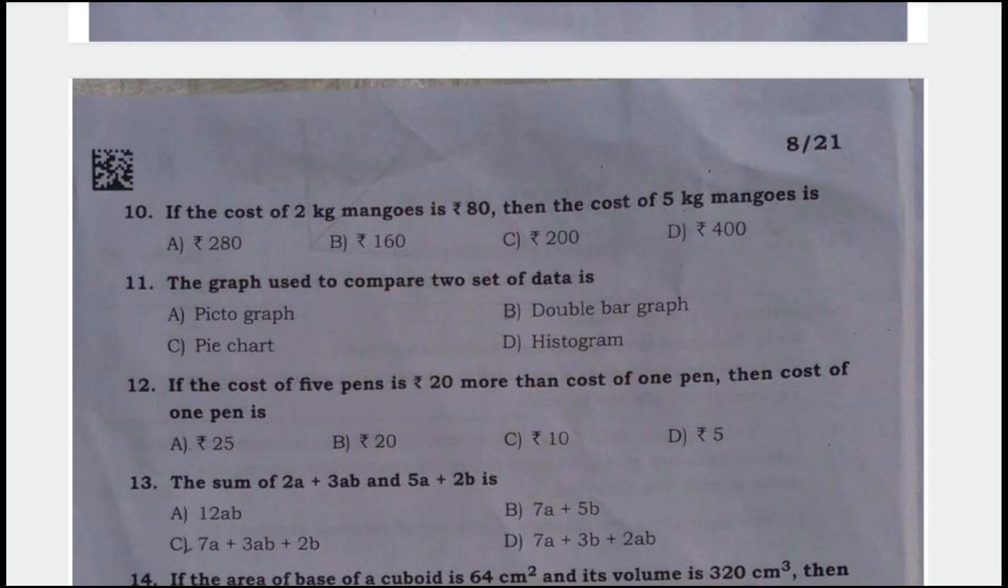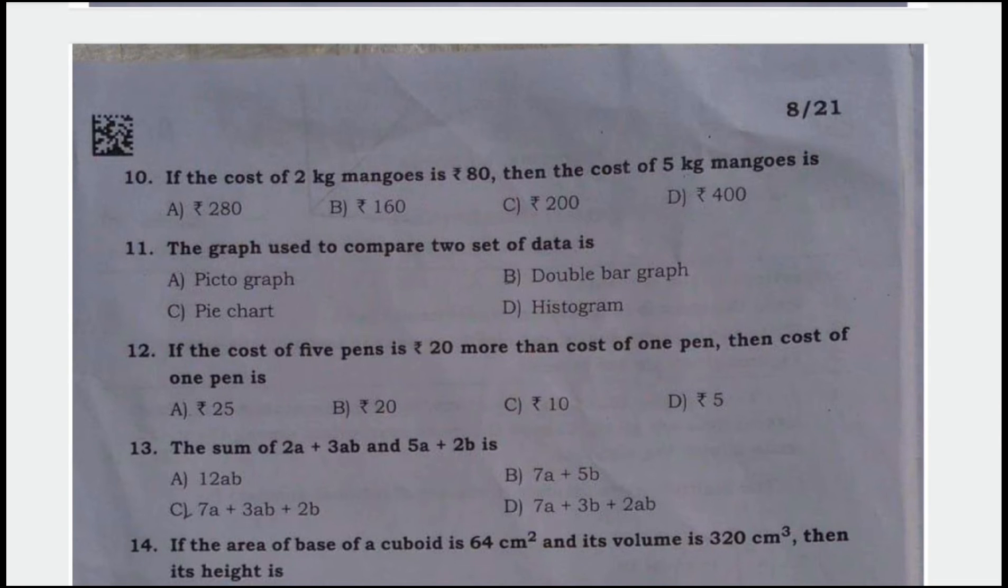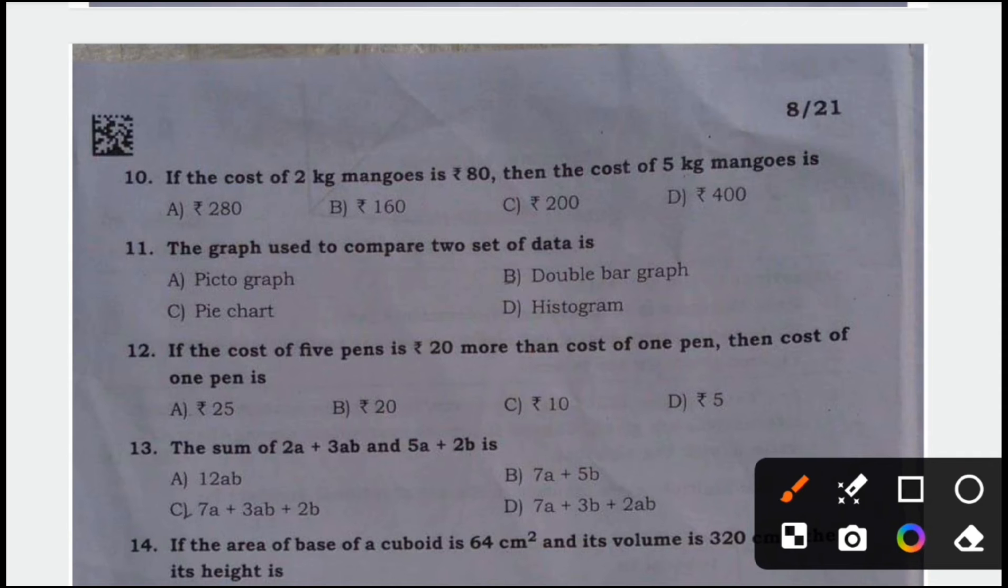Next, the graph used to compare two sets of data. Option A, pictograph, option B, double bar graph, option C, pie chart, option D, histogram. The correct answer is option B, double bar graph.